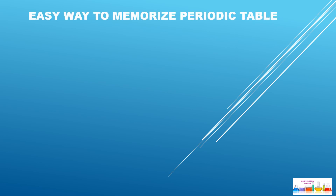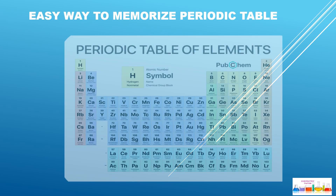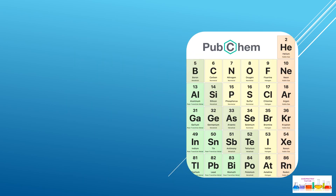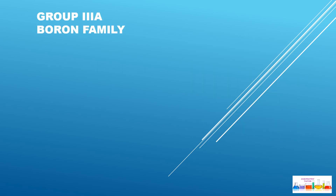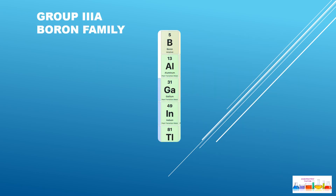Easy way to memorize periodic table p-block elements. Why are we calling them p-block elements? Because the last electron lies in the p subshell. Group 3A: Boron family. We need to learn the sentence: 'Brother Ali Got Indian Title.'